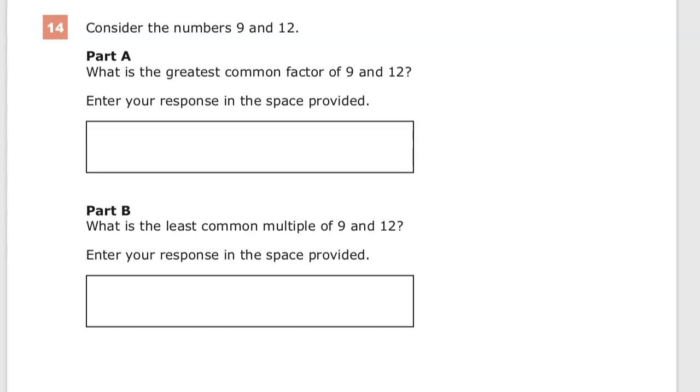Okay, done. I've considered them. Part A, what is the greatest common factor of 9 and 12? And you enter your response in the space provided. And part B, what is the least common multiple of 9 and 12?